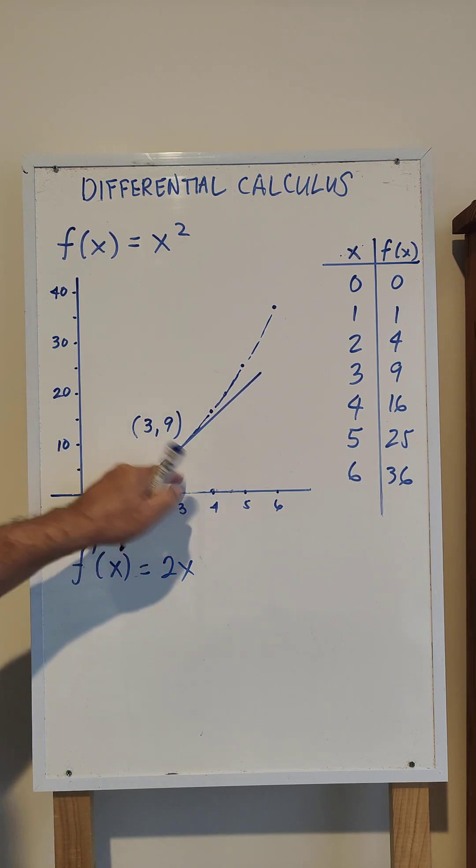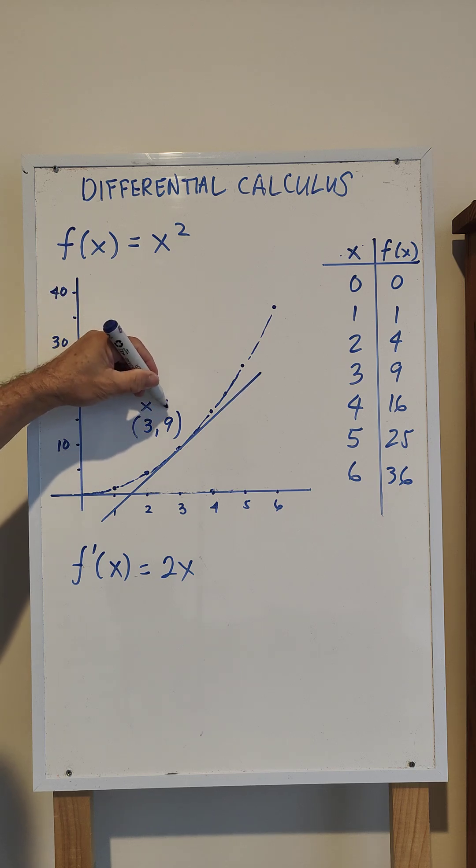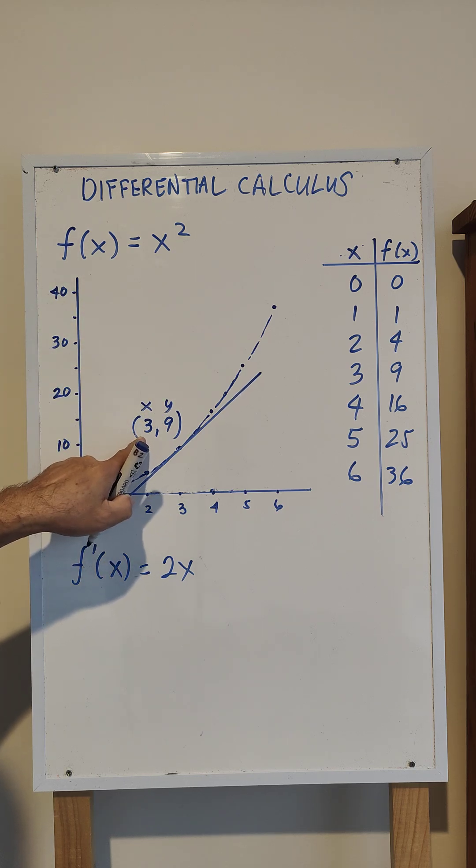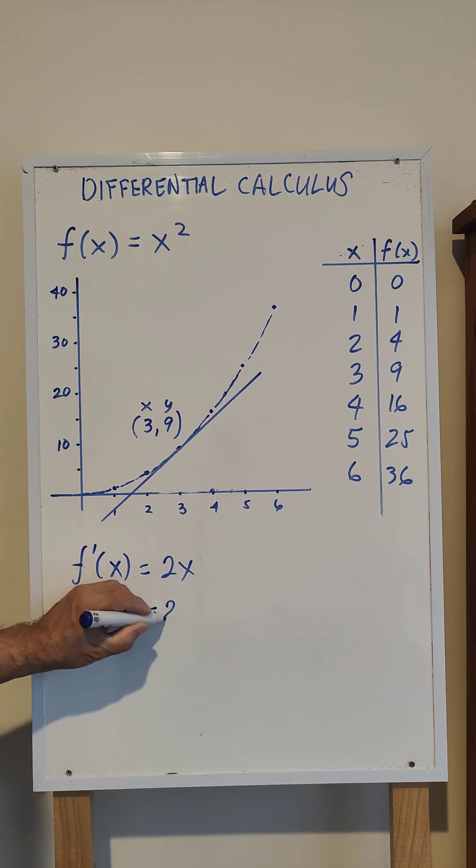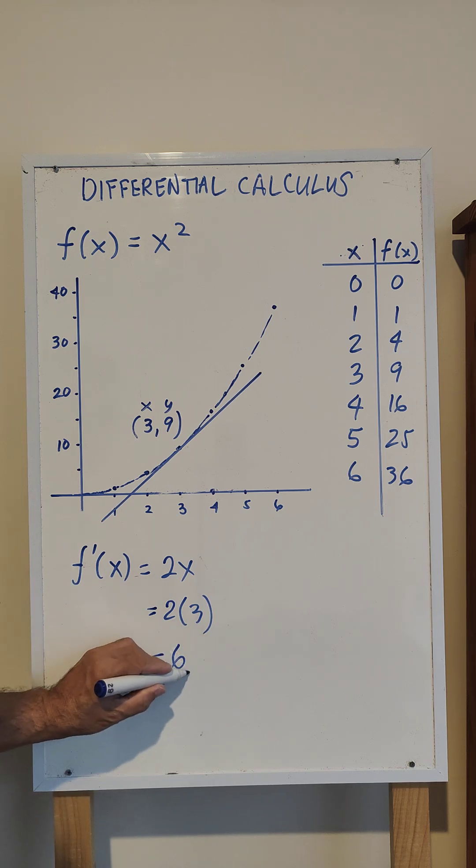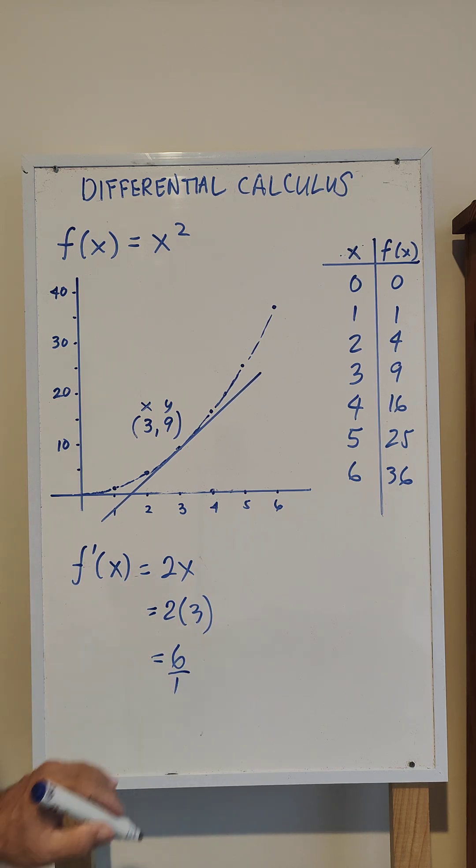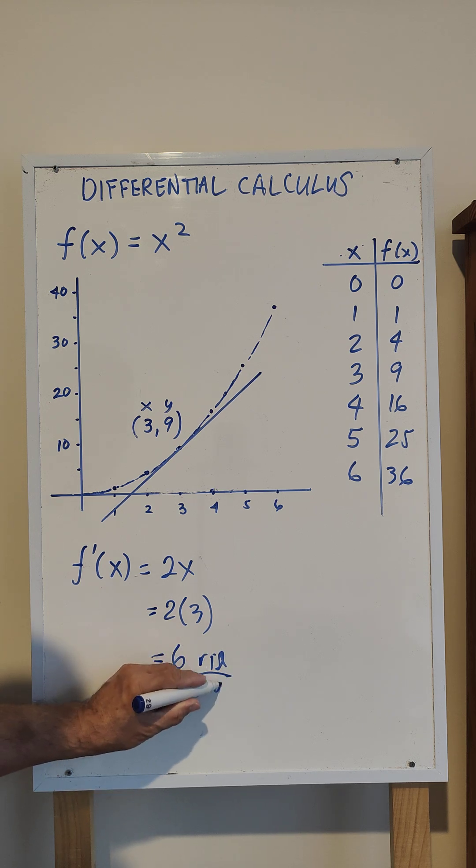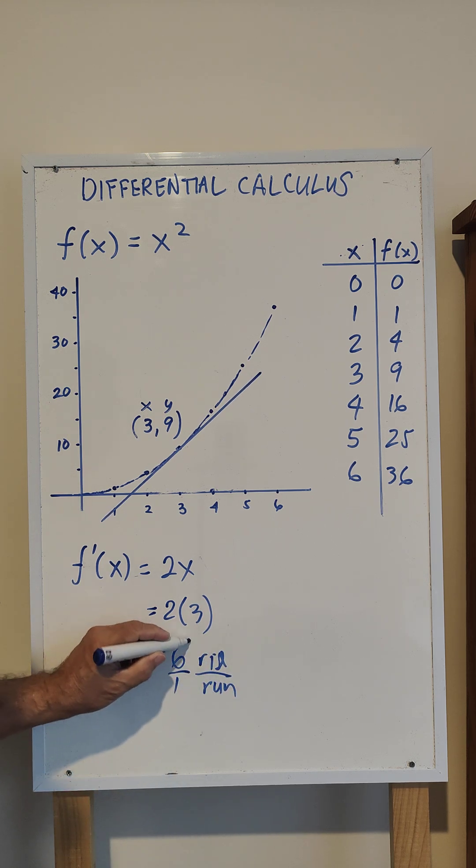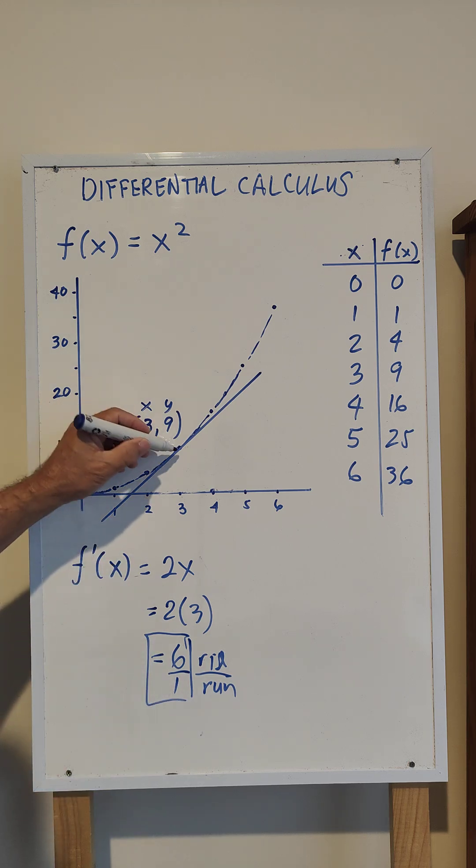If you want to find the slope at this point, this is your x value and this is your y value. You substitute the x value: 2 times 3 equals 6. So the slope is 6 over 1, or this is the rise over the run. This is your slope at this point.